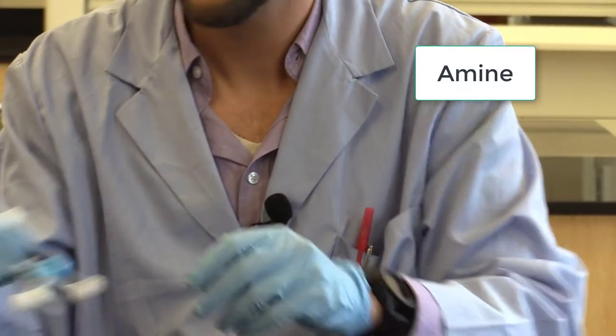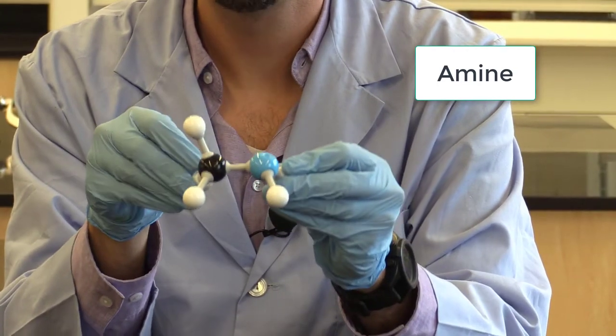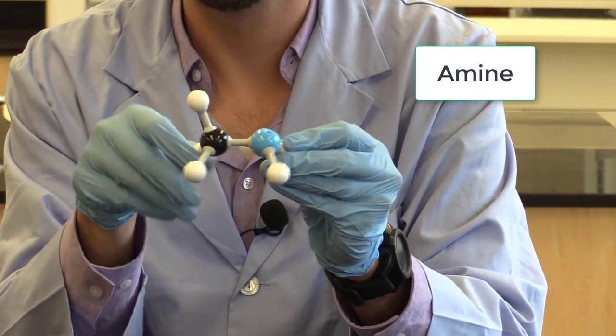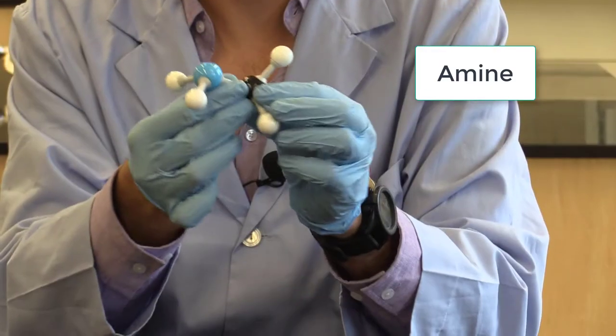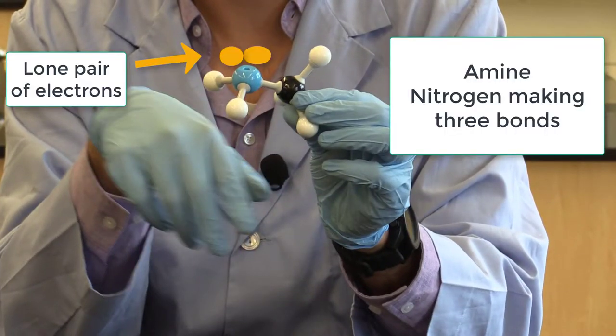This is our amine. You have a nitrogen bonded to a carbon. And what's not being shown here with the amine is the lone pair of electrons. But the nitrogen is making three bonds.